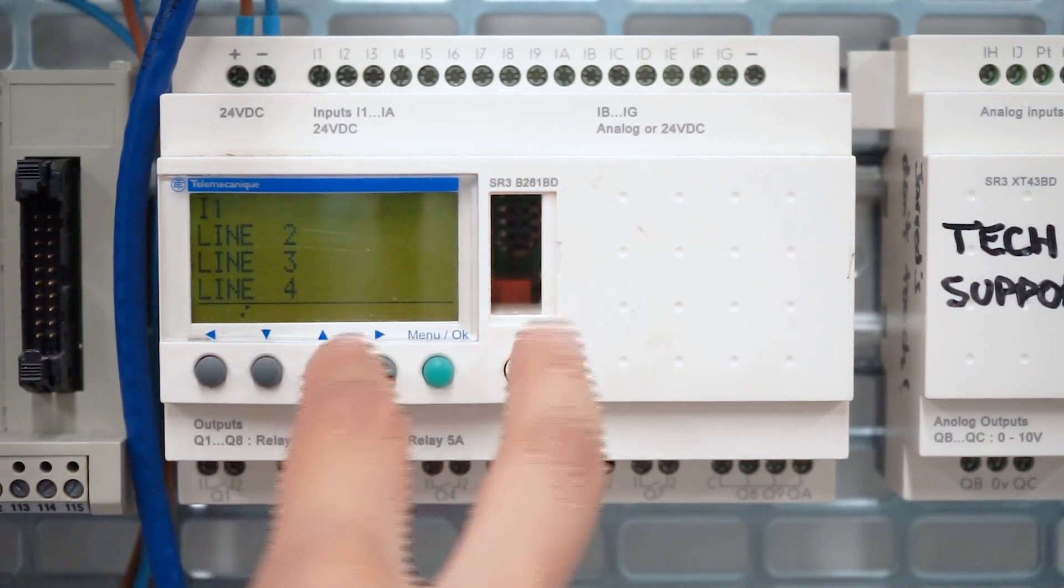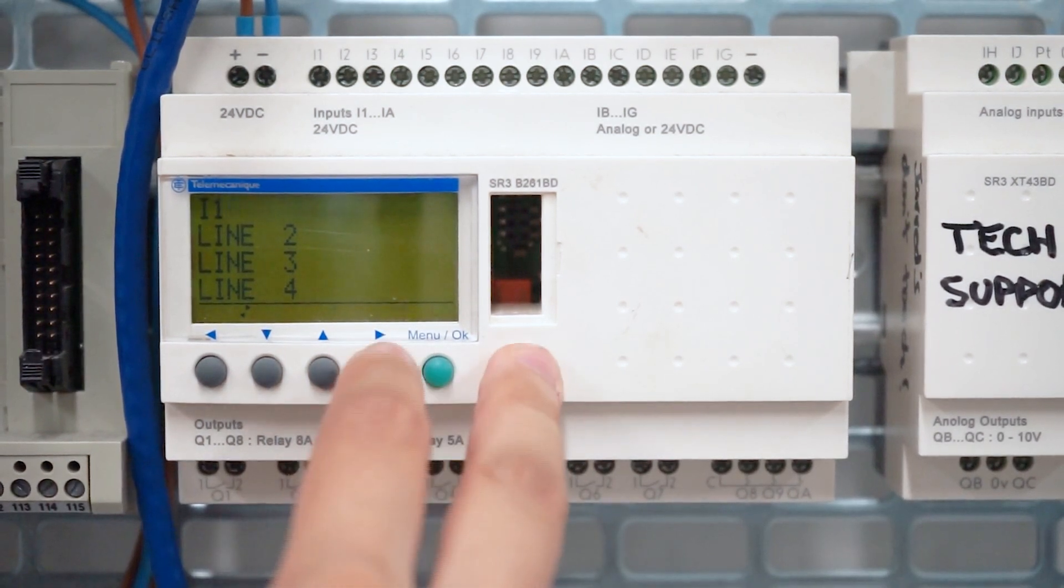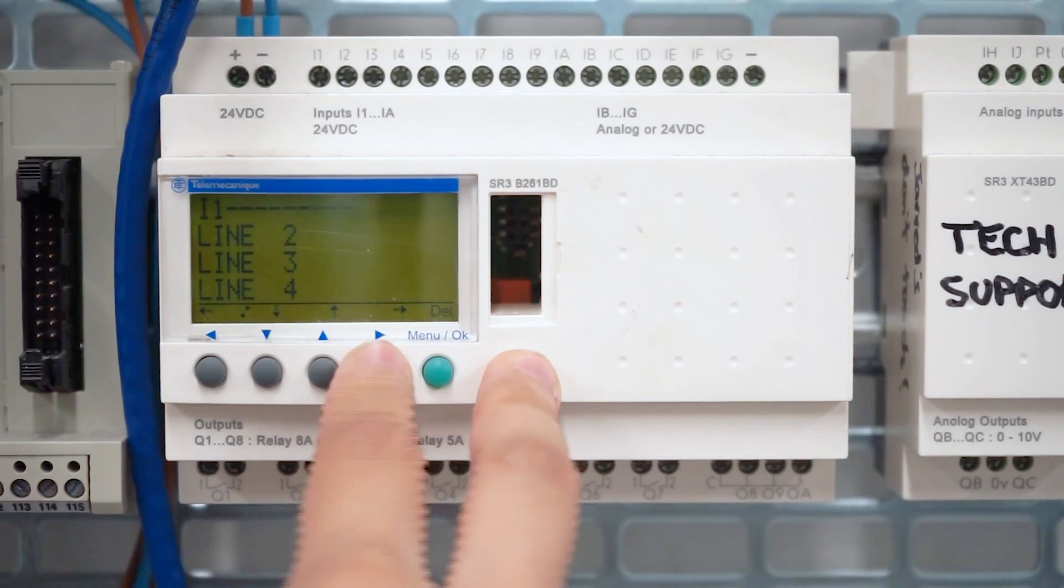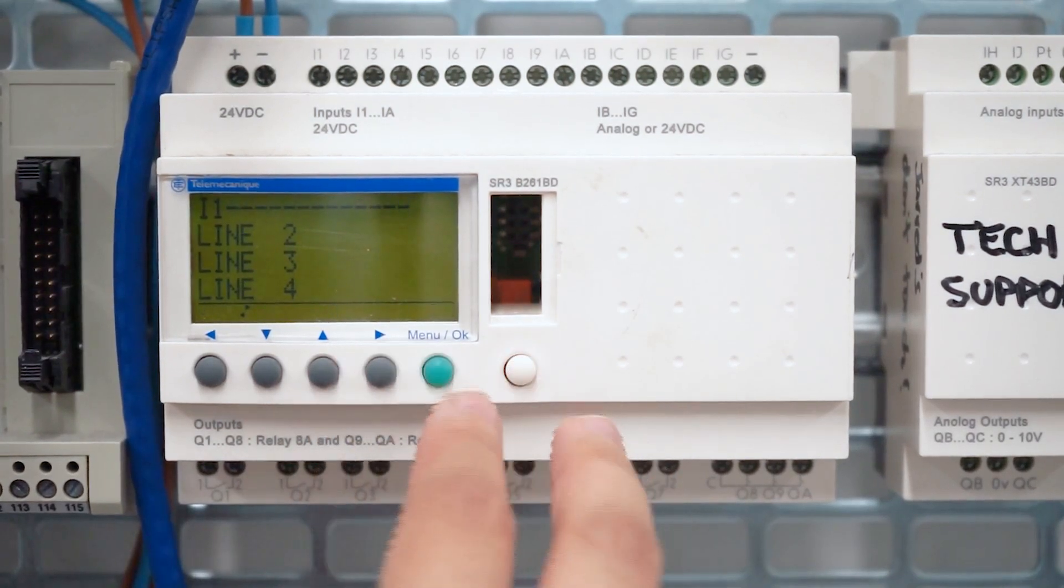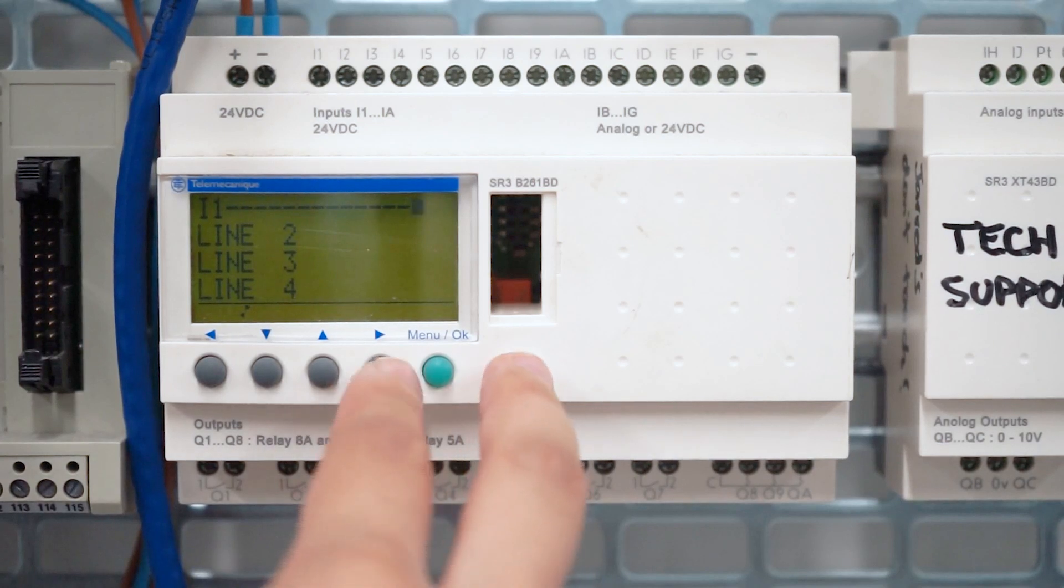Now if you want to draw a connecting line, you press the shift button and the right arrow key, and that will draw a line across. You press the right arrow key again.